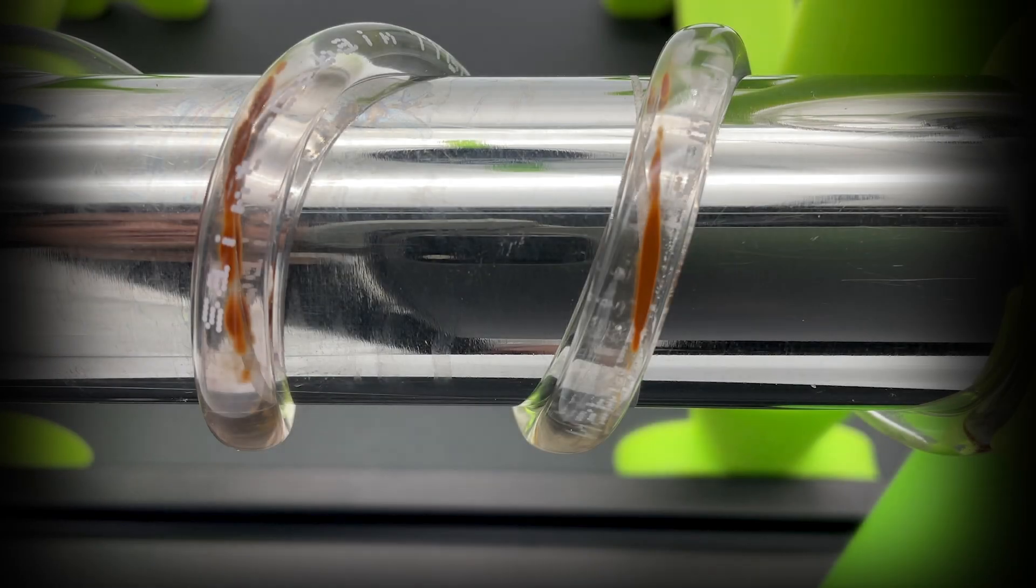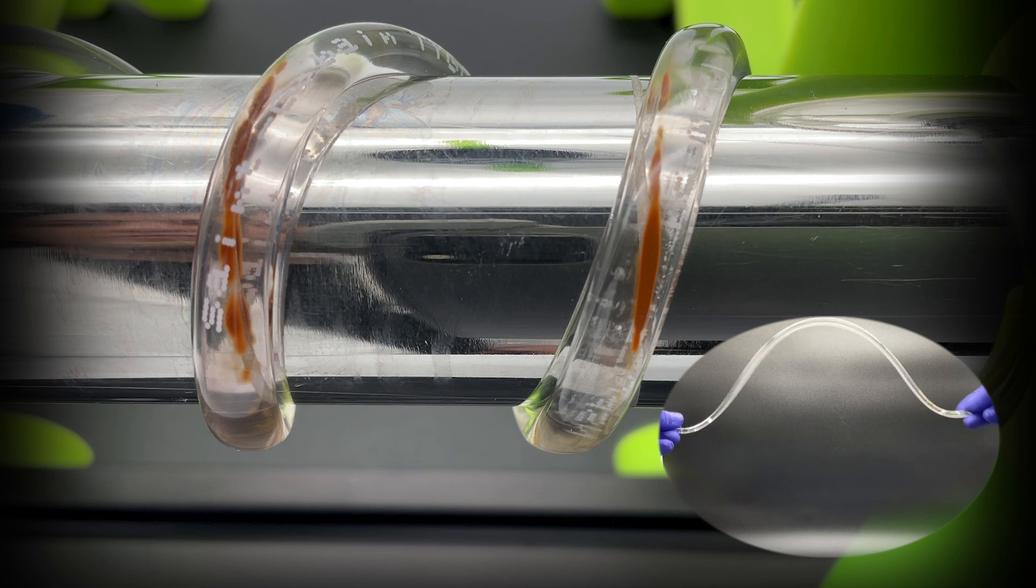This is a close-up of the trapped resin in the high intensity magnetic field zones. I typically twirl the tubing for a few seconds to re-suspend the resin within the tubing before purging the tubing in the next step.